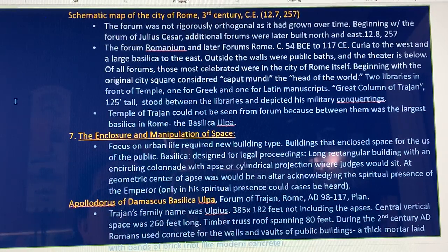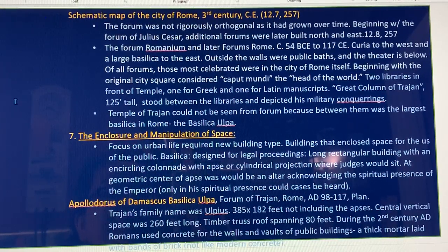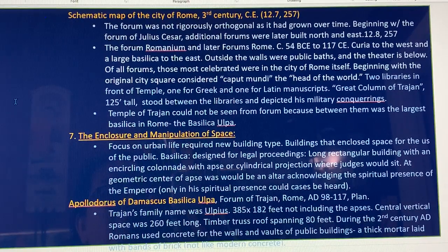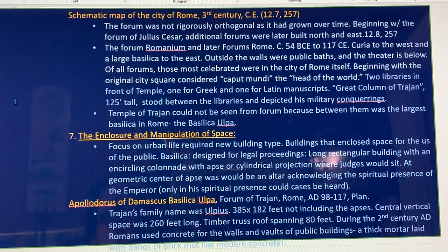The enclosure and manipulation of space, focused on urban life, required new building types — buildings that enclosed space and served the populous. The basilica was designed for legal proceedings: a long rectangular building with an encircling colonnade, with apses and cylindrical projections where a judge would sit. At the center of the apse would be an altar — acknowledging the spiritual presence of the emperor — for only in his spiritual presence could a case be properly heard.